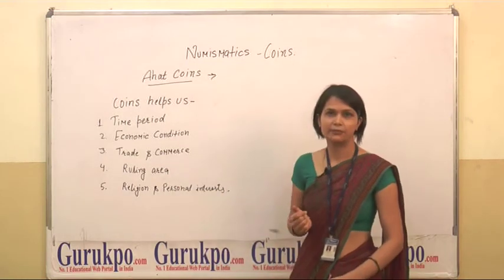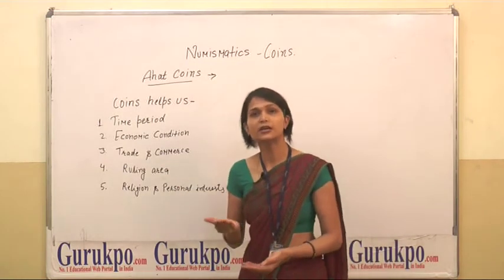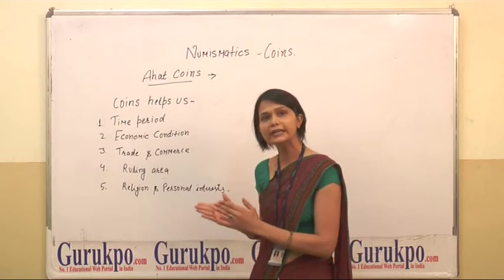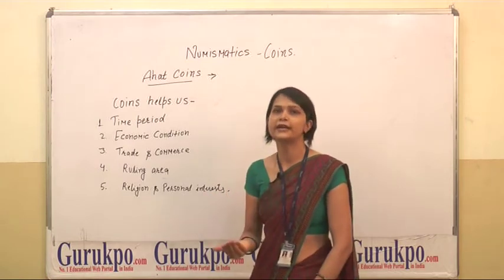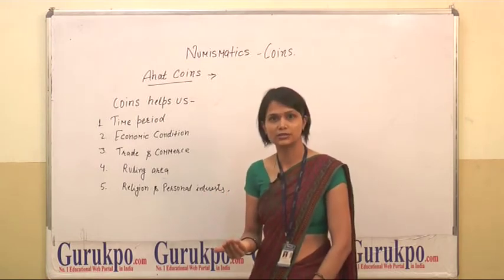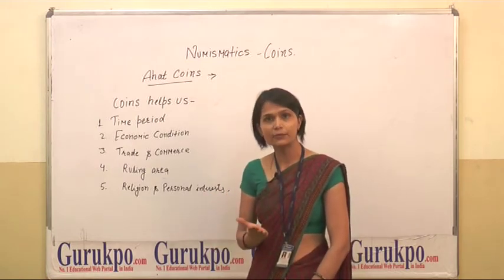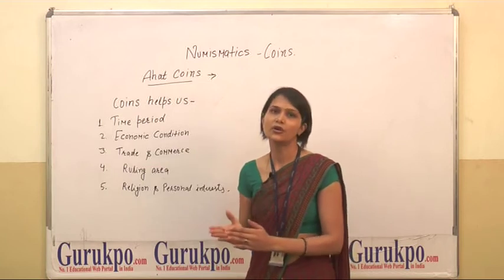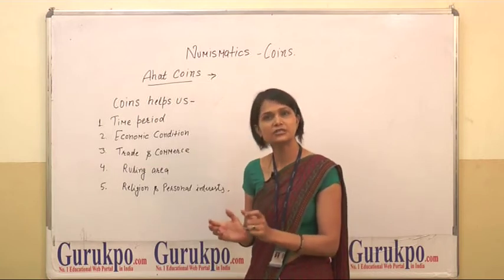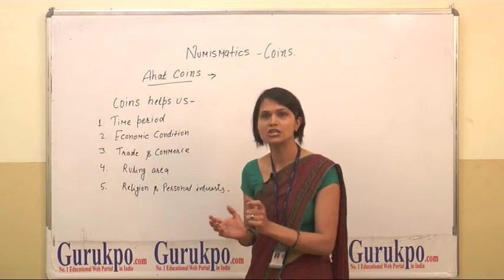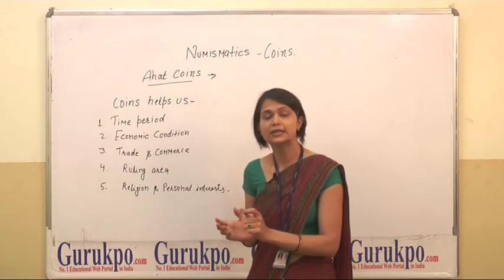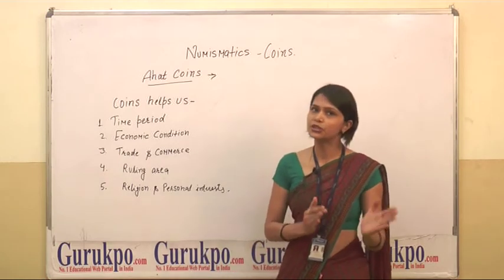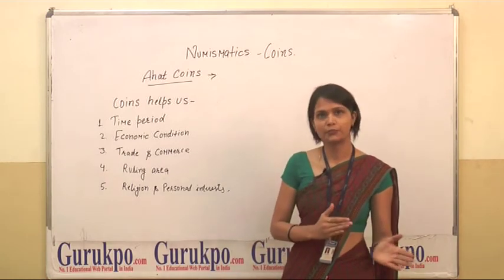Fourth, ruling area. With the help of coins we come to know about the ruling area of a particular dynasty or rulers. For example, if we find coins in a specific area or a specific place, then it shows that area was under that particular ruler.